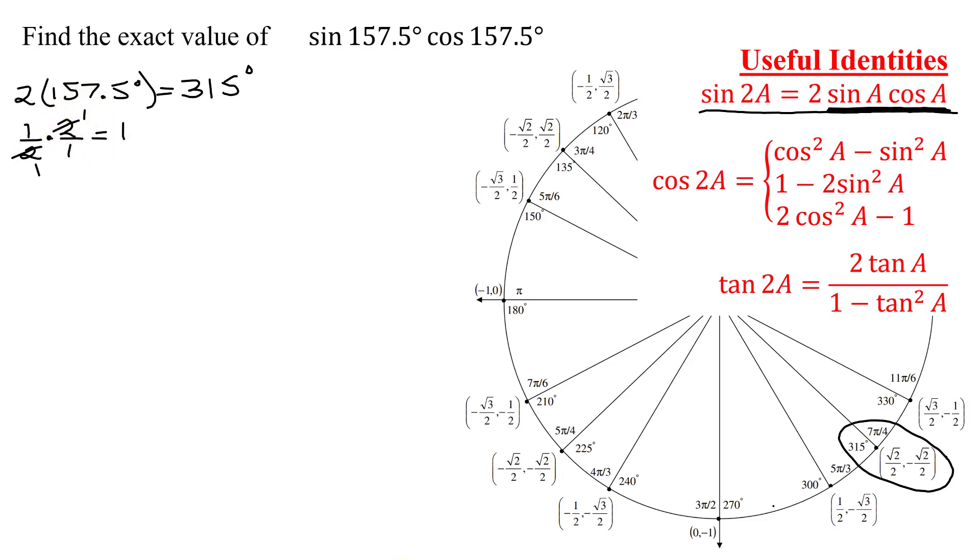So what I can do is take the expression that we need to evaluate, and I'm going to multiply in front by 1 half. And then inside the parenthesis, I'm going to have 2 times the sine of 157.5 degrees times the cosine of 157.5 degrees. So now this equals 1 half, and instead of 2 sine 157.5 degrees times the cosine of that angle, I'm going to use this double angle formula.